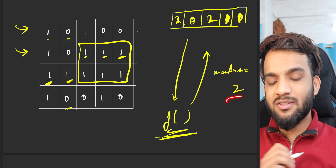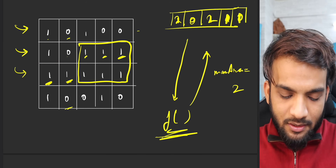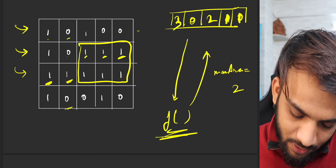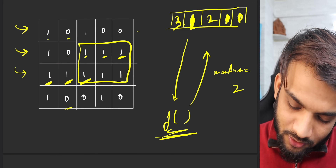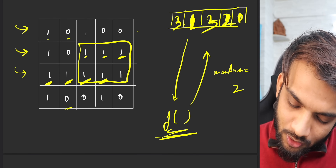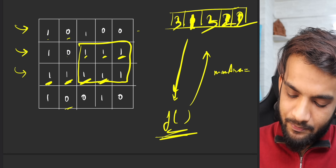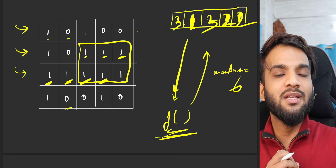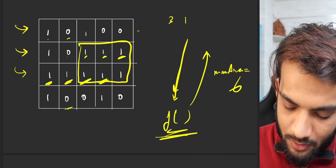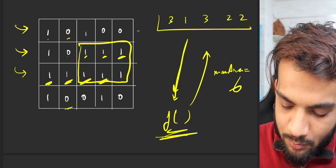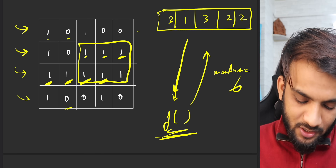Moving to the next row, we get another one so heights keep increasing. The updated heights become 3, 1, 3, 2, 2. Passing this to the function gives a maximum area of six. So as of now the running maximum is six.